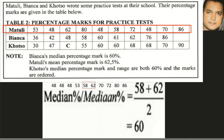When arranging Matuli's marks from highest to lowest, the two middle numbers are 58 and 62. We add those numbers and divide by two, and we get an answer of 60.